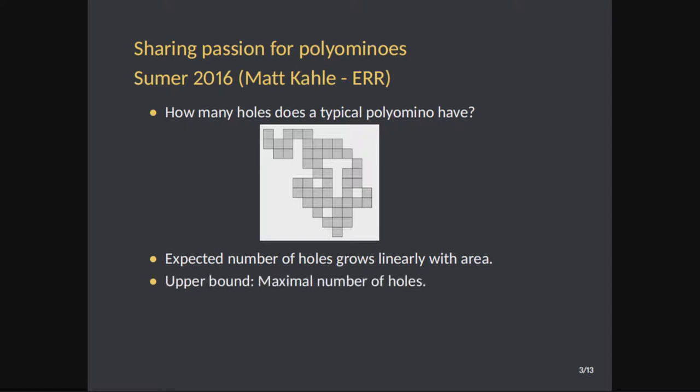Today I want to talk about the maximum number of holes. If I give you n squares and ask you to create a polyomino that reaches the maximum number of holes, we conjecture that you can reach one half n. The best bound in the literature — state of the art — was one third. So this is a really good improvement.